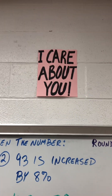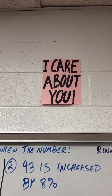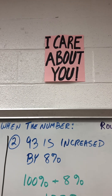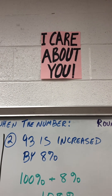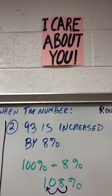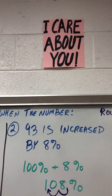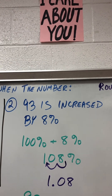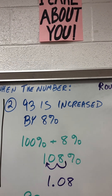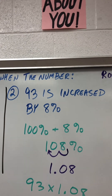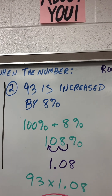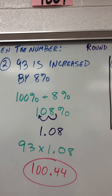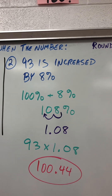93 is increased by 8%. Take 100% plus 8%. That gives you 108%. Move the decimal two places, that gives you 1.08. So take 93 times 1.08. That gives you 100.44.